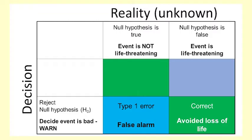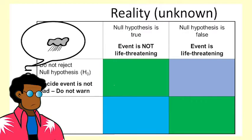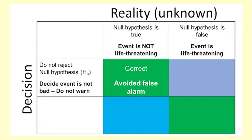If instead the forecaster had decided that the weather event was not bad enough to send a warning about, they may be correct. Or, if the forecaster is wrong and the weather event is life threatening, then they made a Type 2 Error. They failed to reject the null hypothesis when they should have.